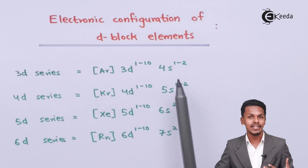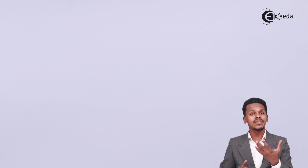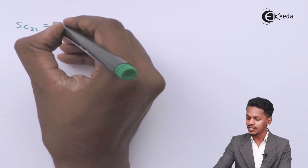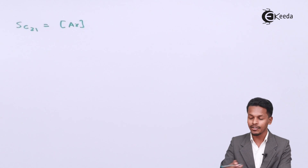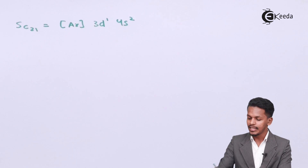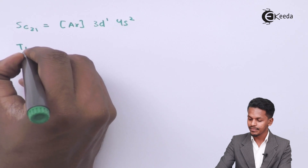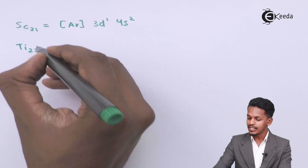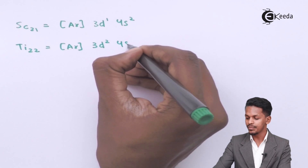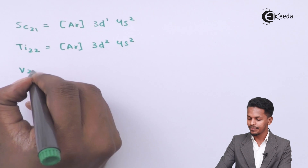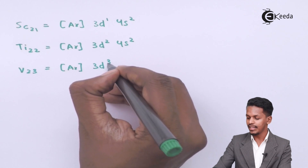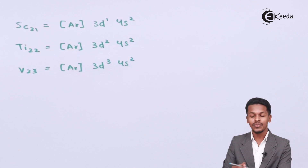Now let me give the electronic configurations for the 3d series. Scandium: [Ar] 3d¹ 4s². Titanium: [Ar] 3d² 4s². Vanadium: [Ar] 3d³ 4s².